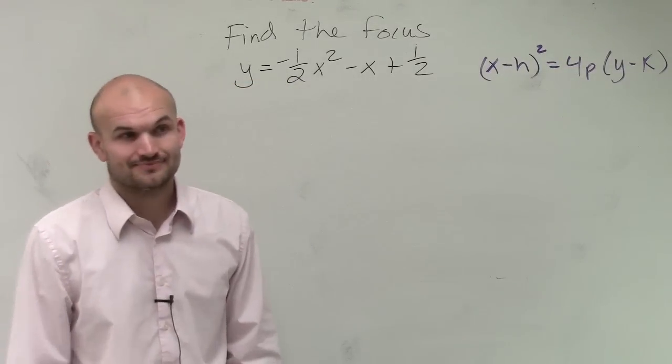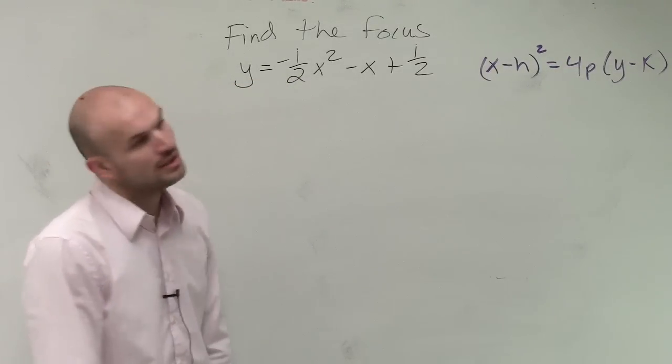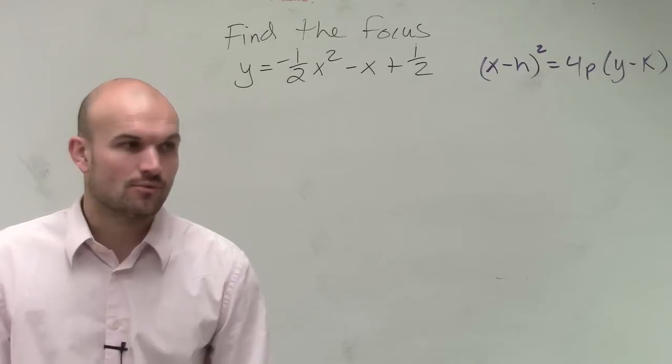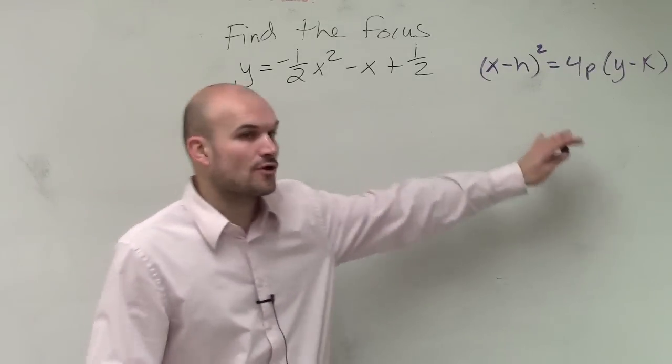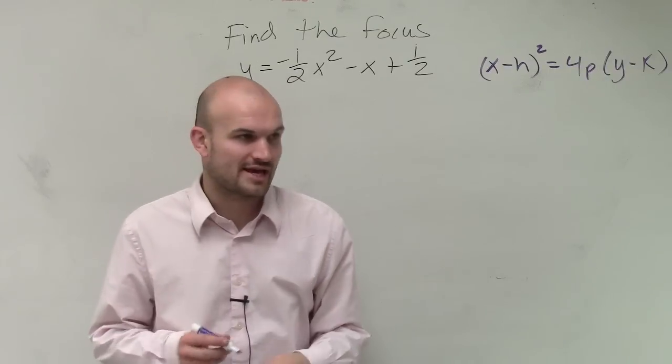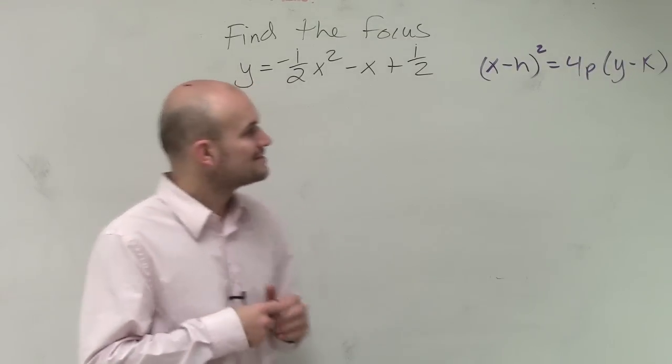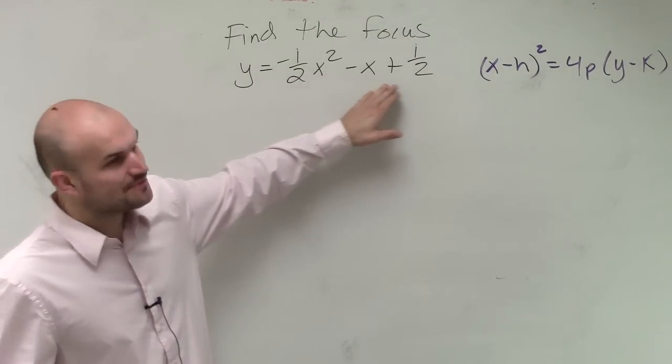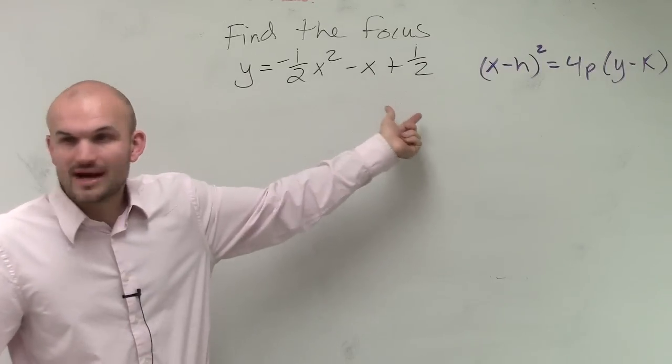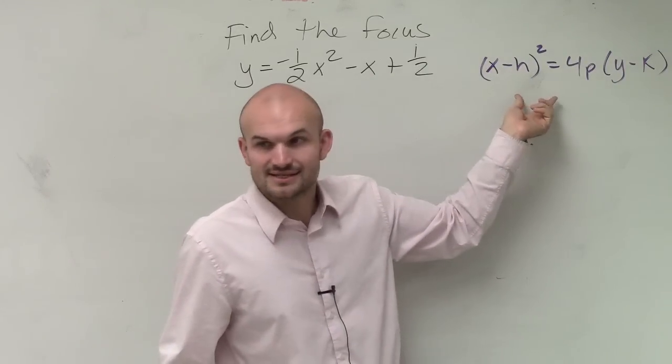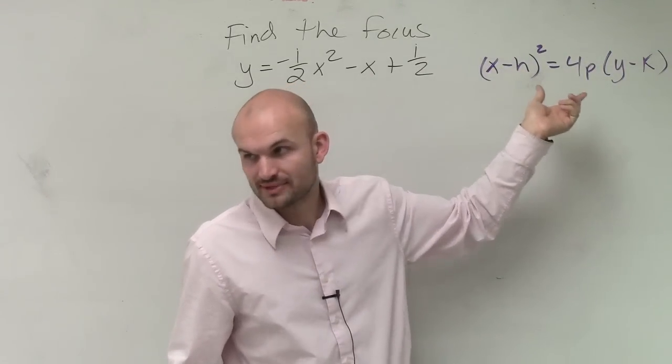We need to write it in that format. This is not in that format, is it? No. So what we need to do to write it into this format is this is when we're going to come back into that completing the square. We have x squared minus x plus one-half.